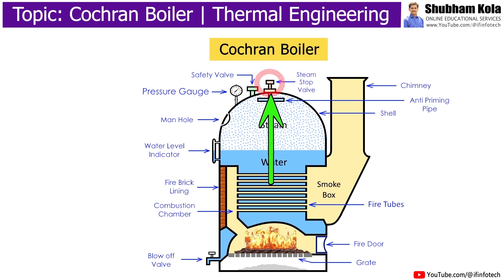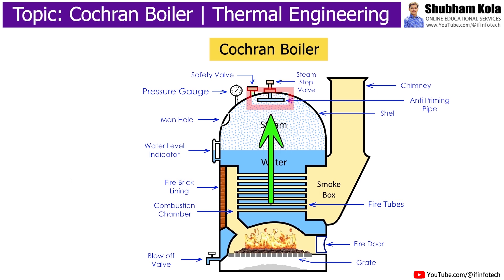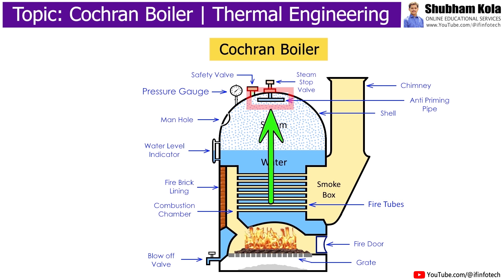The steam stop valve regulates the supply of steam outside. An anti-priming pipe is provided to ensure that only dry saturated steam enters the super-heater via the steam stop valve.